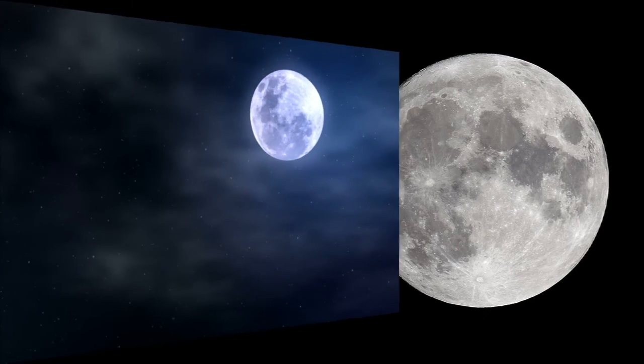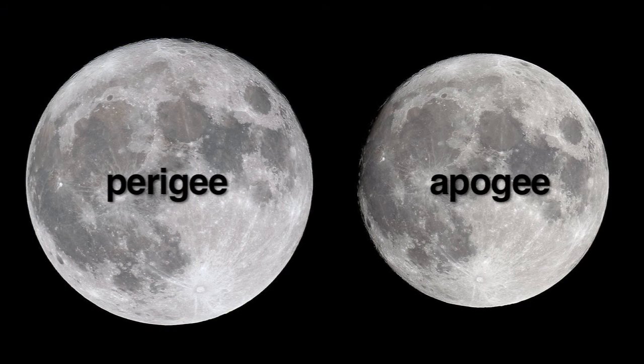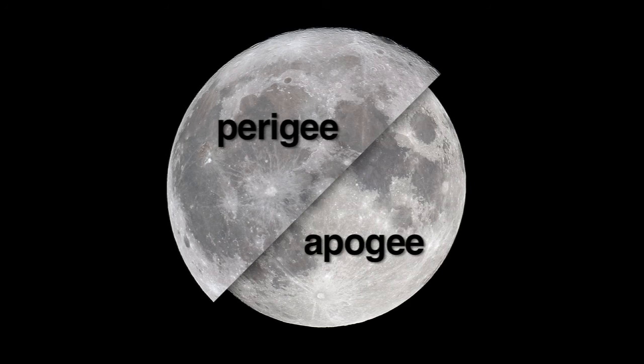Looking at the Moon in the sky without anything to compare it to, you wouldn't notice it. But the difference in size can be quite significant if you were to photograph the Moon at its apogee and at its perigee and compare the two photos.